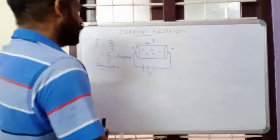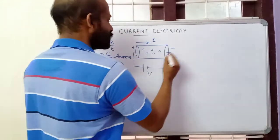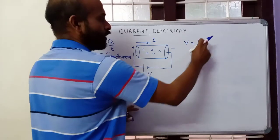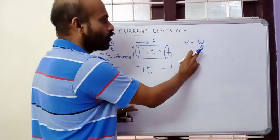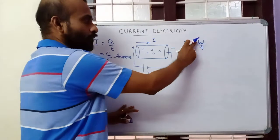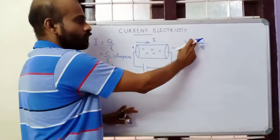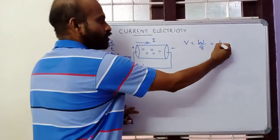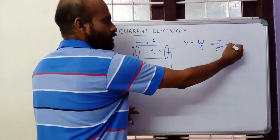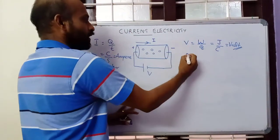Now we will see what is meant by potential difference. Potential difference is defined as the work done to move Q coulombs of charge — work done divided by charge. If you want to move Q coulombs of charge from one end to the other end of a conductor, W is the corresponding work done and Q is the quantity of charge. So W by Q is the potential difference. Work done has unit joule, charge has unit coulomb, so potential difference has unit joule per coulomb, otherwise known as volt.